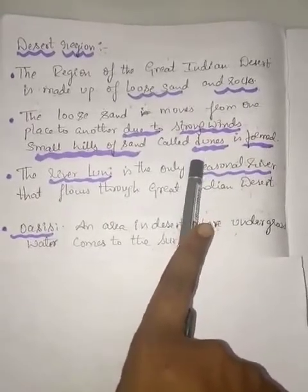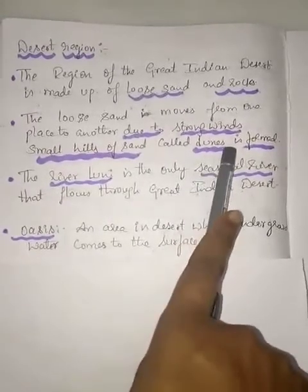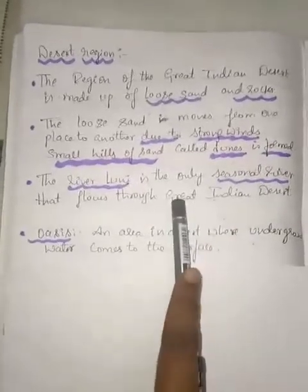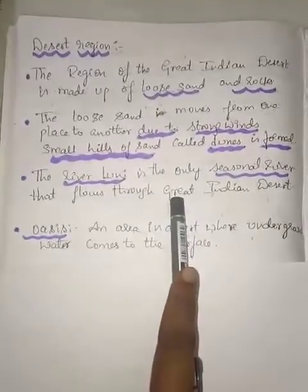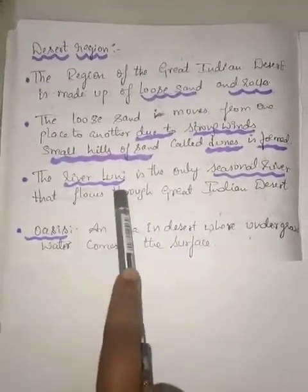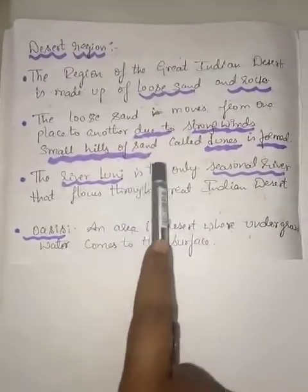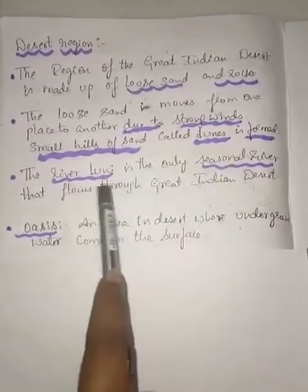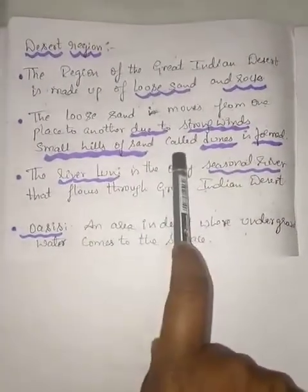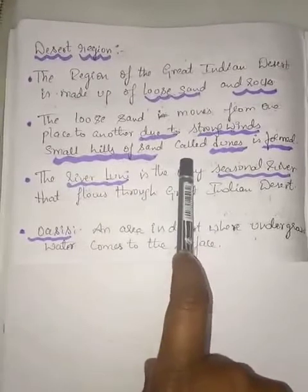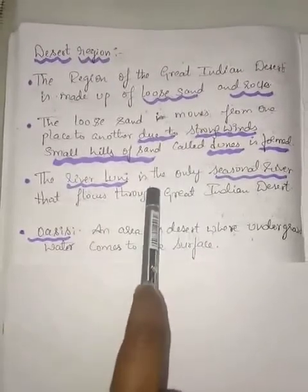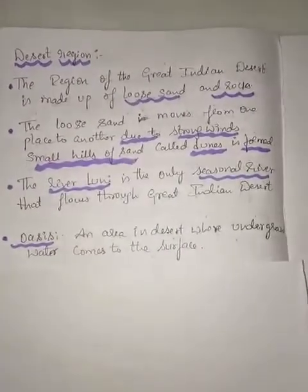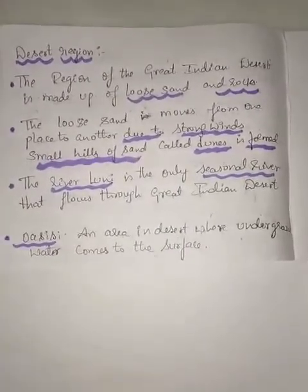Dunes, D-U-N-E-S, are formed by strong winds, which are also called dust storms. The desert is basically covered with sand, and there is a scarcity of water — the availability of water is very less in the desert region.